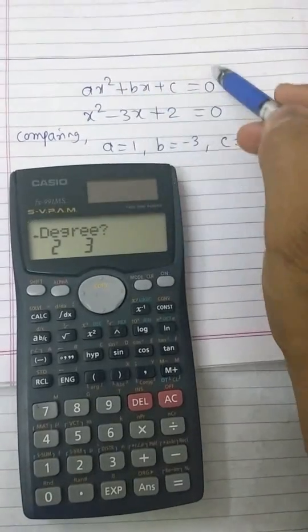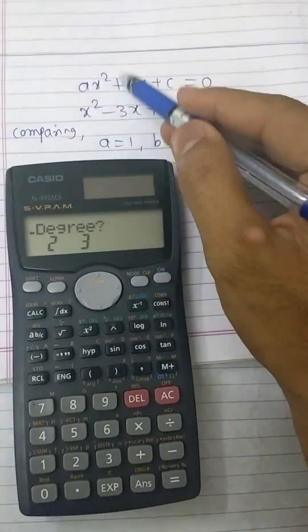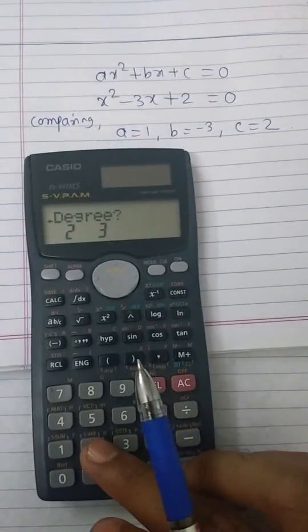Here our equation is quadratic equation that is of degree two. Therefore, we are choosing two.